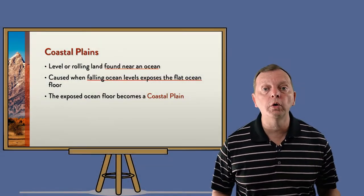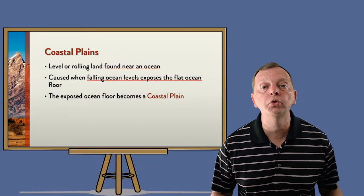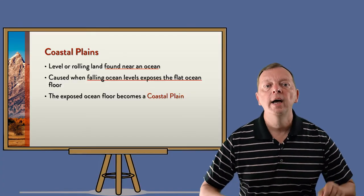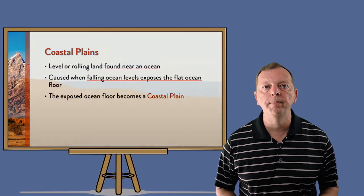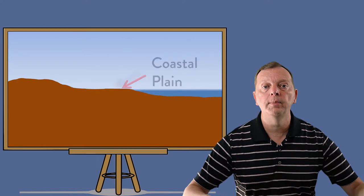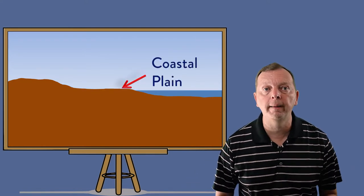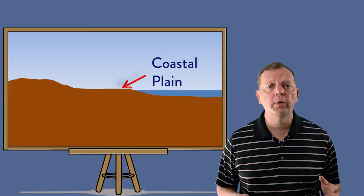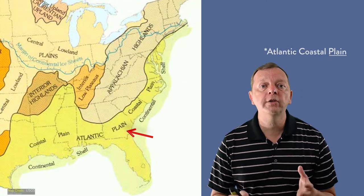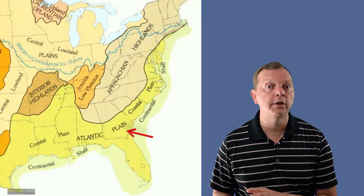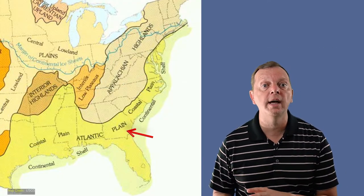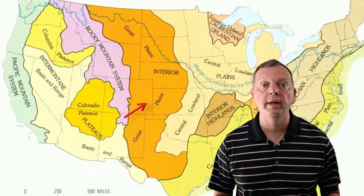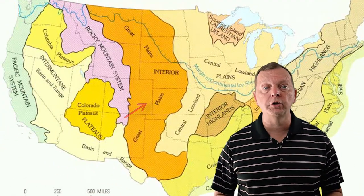Now lava spreading across the land from volcanic eruptions has also created some of these plains. Many of the plains of the world are coastal plains — low-lying areas next to an ocean. When sea levels fall, they expose what used to be the ocean's flat floor, and this becomes a coastal plain. This is what created the Atlantic coast, making up most of the southeast portion of the United States, as well as America's Great Plains in the center of the country.